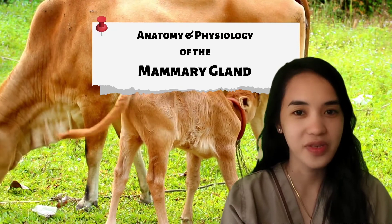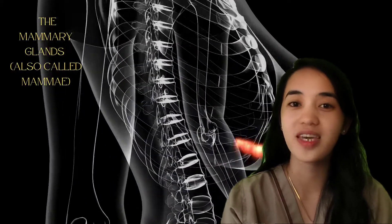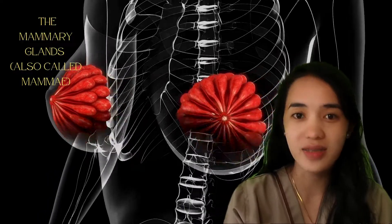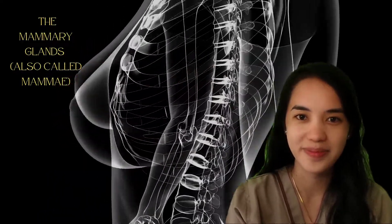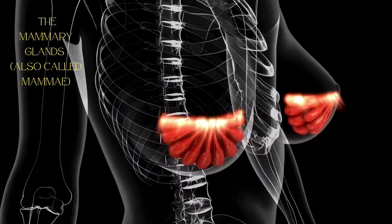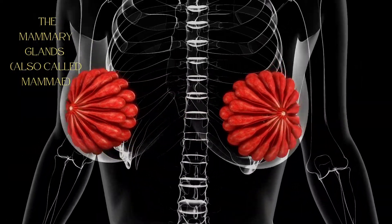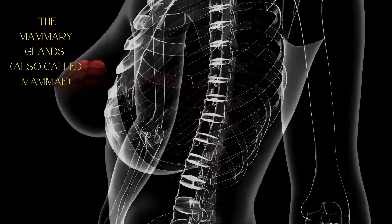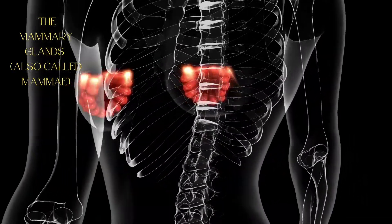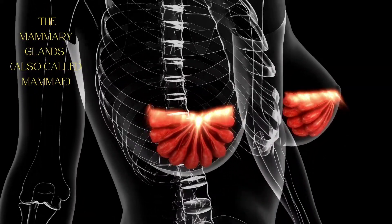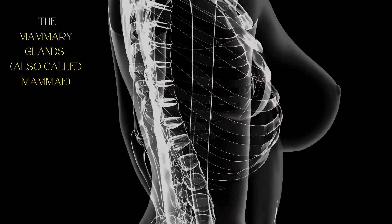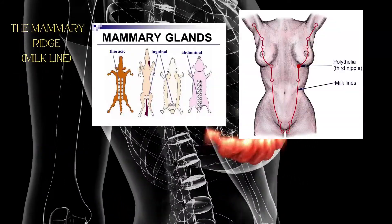Welcome. In this video we are going to talk about the anatomy and physiology of the mammary gland. The mammary glands, also called mammary, are modified sudoriferous or sweat glands that produce milk for the nourishment of offspring. They develop from bilateral thickenings of ventral lateral ectoderm of the embryo, the so-called milk lines, which are more correctly referred to as the mammary ridges.